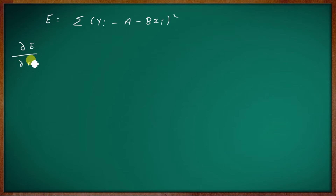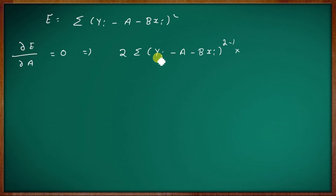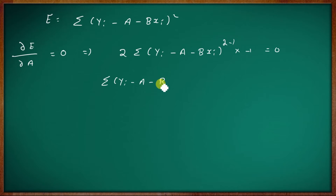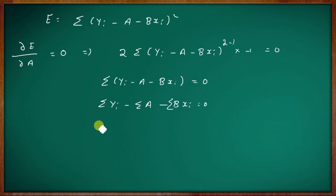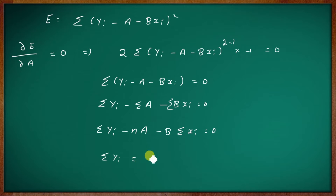Setting ∂E/∂a equal to 0: 2 into summation (Yi minus a minus bxi) into (minus 1) equal to 0. This gives summation Yi minus a minus bxi equal to 0, which simplifies to summation Yi equal to nA plus B into summation xi. This is normal equation 1.